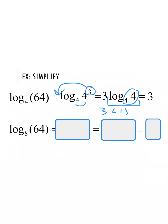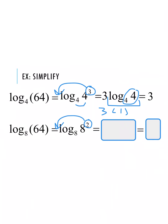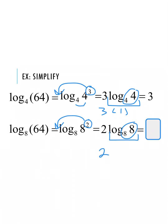Our second example is log base 8 of 64. Again I rewrite 64 as 8 squared: log base 8 of 8 squared. I move the exponent 2 to the front: 2 times log base 8 of 8. Since the base and the value are the same, that simplifies to 1, so I have 2 times 1 for a final answer of 2.